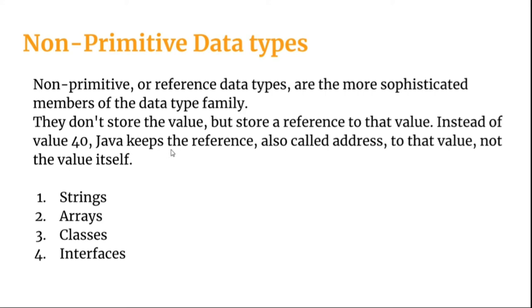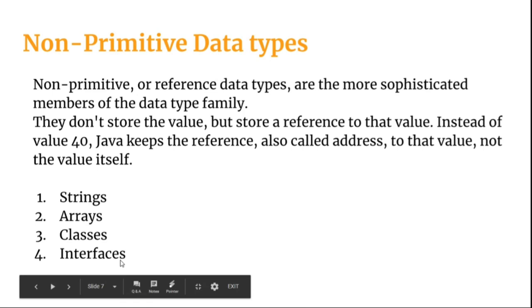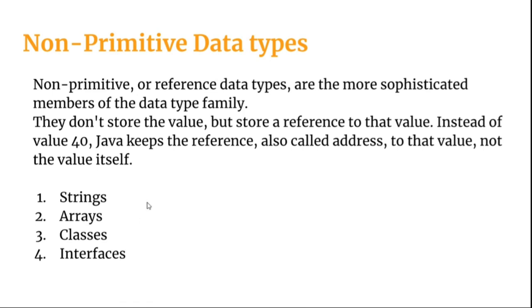Hence Java keeps the reference, also the address to that value and not the value itself. Some of the non-primitive data types are strings, arrays, classes and interfaces. Once we get deep into the course, you will see that we are using non-primitive data types a lot.